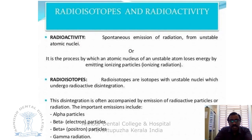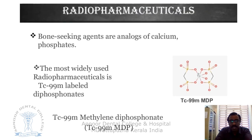Radioactivity is the spontaneous emission of radiation from an unstable atomic nucleus. You have different types of radioisotopes which have an unstable nucleus and undergo radioactive disintegration. These emissions include alpha particles, beta particles, positrons, and gamma radiations.